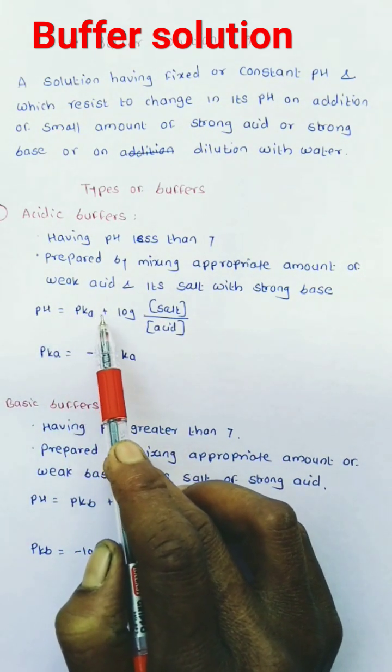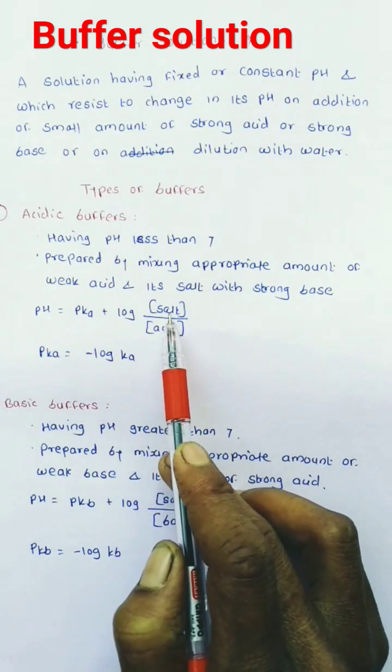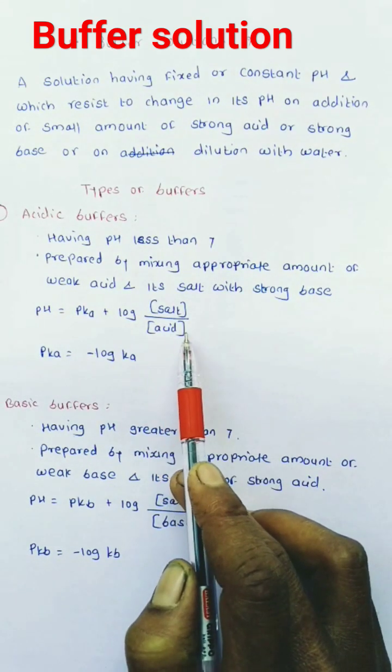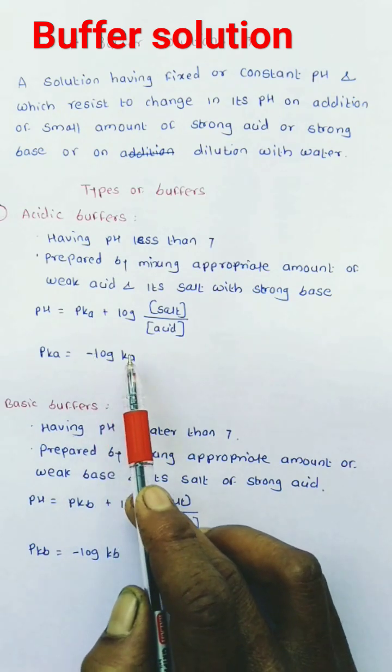For acidic buffer, pH equals pKa plus log of concentration of salt divided by concentration of acid, where pKa equals minus log Ka.